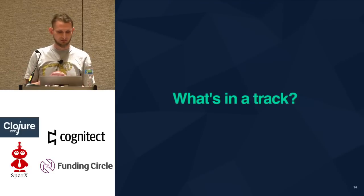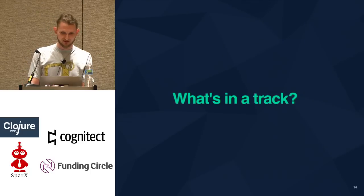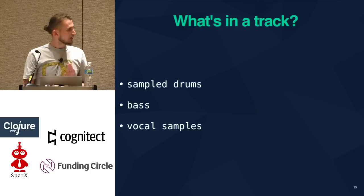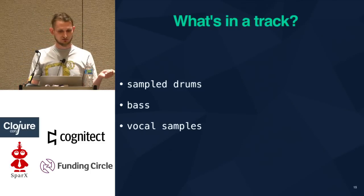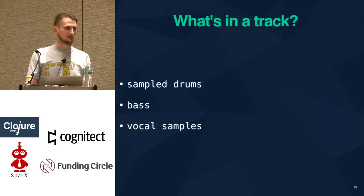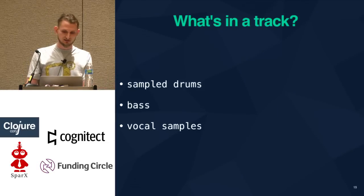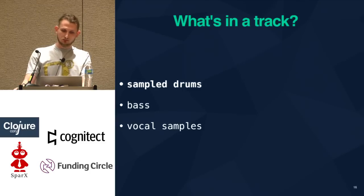So what is the bare minimum that constitutes a classical jungle track? There hasn't been any audio here yet, but we're going to get to that soon. At the very bare minimum, we're going to have sampled drums, some bass lines, and vocal samples. This is just some constraints I added for the purpose of this presentation — there are many flavors of jungle music. Let's start with the drums because this is really the core of the jungle sound.